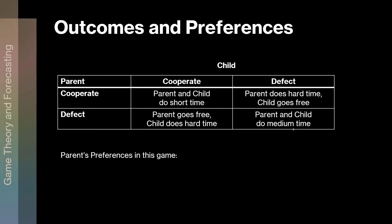I've rewritten the outcomes. Remember, in a game, each player's combination of strategies produces an outcome. If both the parent and the child cooperate — stick to their story — parent and child do short time. If the parent cooperates but the child defects and turns evidence on the parent, the parent does hard time but the child goes free. If the parent defects and rats out the child, the child does hard time and the parent goes free. If they both defect and rat on each other — the normal outcome we think of — they both do medium time.